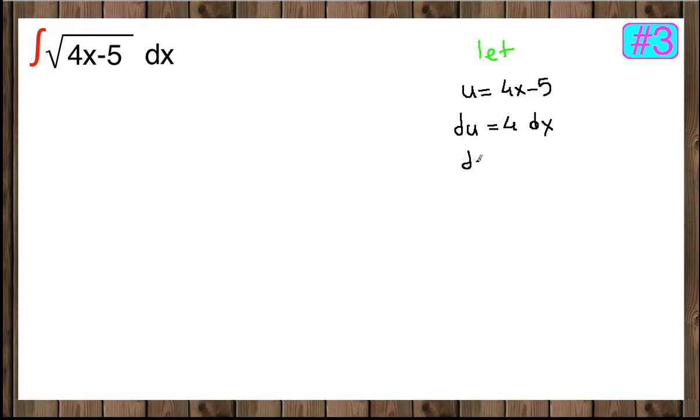Here let's solve for dx. If we divide both sides by 4, we get 1 fourth du. Now let's write in terms of u. So 4x minus 5 is our u. And instead of the dx, we are going to insert 1 fourth du.